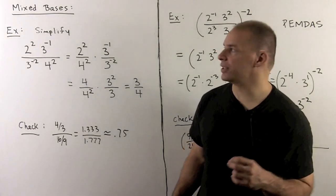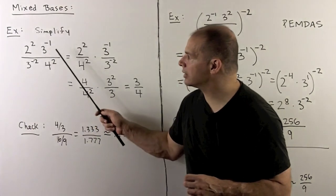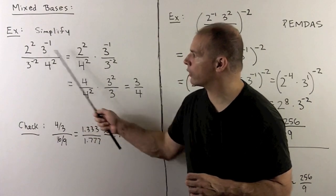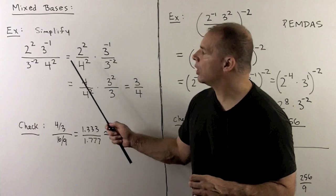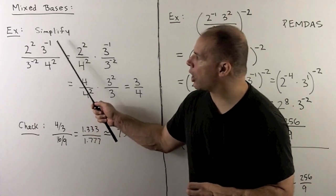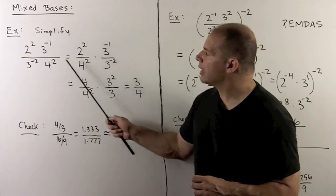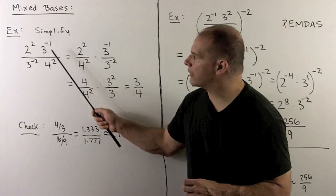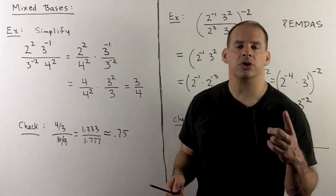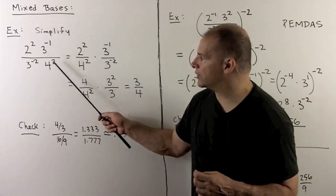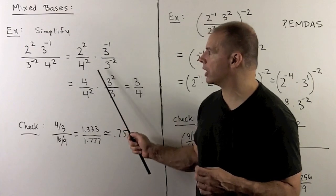For instance, if I want to simplify two squared times three to the minus one over three to the minus two times four squared, I want to put all terms with the threes together. Then with what's left over, I look at the two squared — that's four — so we also have things that are in base four, and I put them in their own expression.